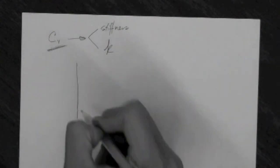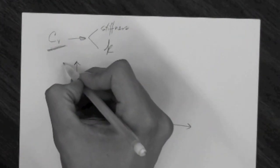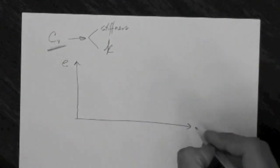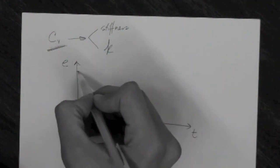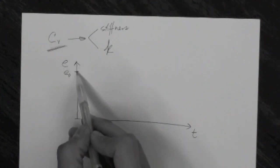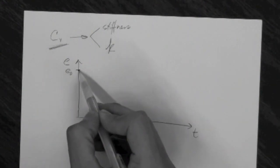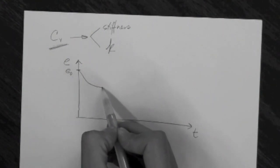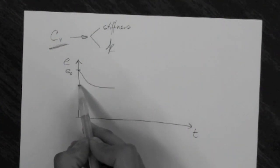Remember from the Consolidation 1 videos that we plotted void ratio versus time. We have our specimen in the consolidometer in the lab at E0. Then we load it with a specific stress, and the specimen consolidates. It takes some time for the void ratio to reach the new void ratio, say Ea.